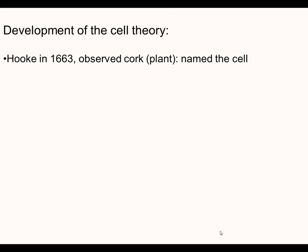Some of the scientists that were very instrumental in the development of the cell theory — as you noticed when you did your cell quest — was a gentleman by the name of Robert Hooke. He did a lot of his work back in the 1600s. His contribution was that he did his work on cork — the dead portion of a plant from a tree — so it didn't really have any of the organelles within it, but it had the basic outer wall. He named them the 'cell' because he was living in a monastery and these compartments he was looking at looked like the rooms he lived in, which they called cells.